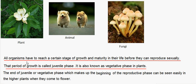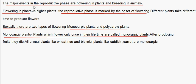All organisms have to reach a certain stage of growth and maturity in their life before they can reproduce sexually. The end of the juvenile or vegetative phase marks the beginning of the reproductive phase, which can be seen easily in higher plants when they come to flower. The major events in the reproductive phase are flowering in plants and breeding in animals.